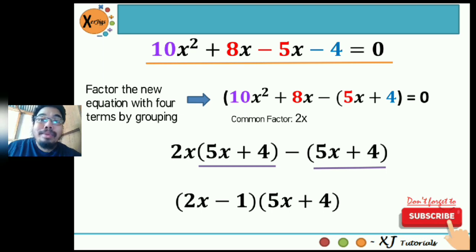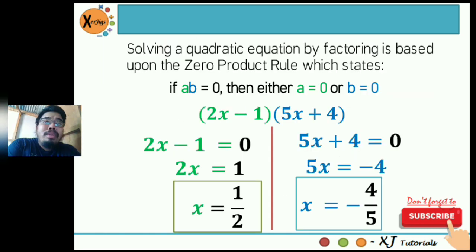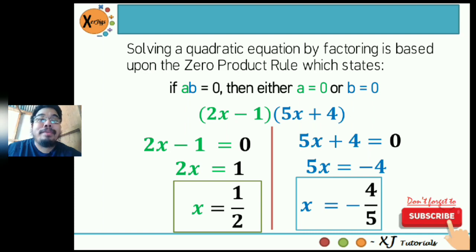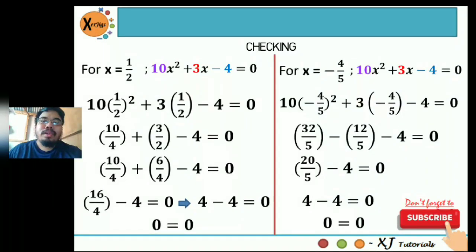Applying the zero product rule, we equate each factor to zero. For 2x minus 1 equals 0: moving negative 1 to the right gives 2x equals 1, so x equals one-half. For 5x plus 4 equals 0: moving positive 4 to the right gives 5x equals negative 4, and dividing both sides by 5 gives x equals negative four-fifths.